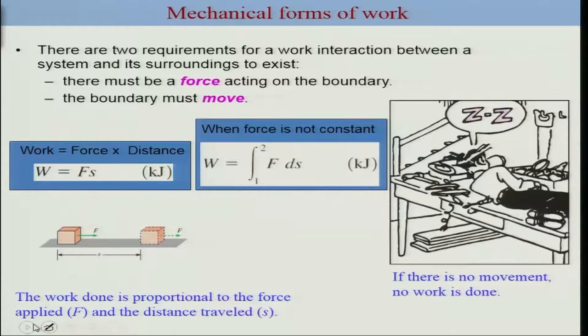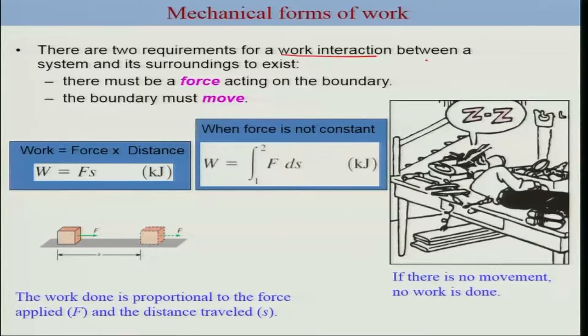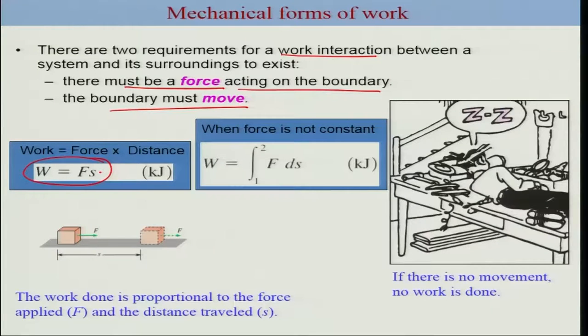There are many forms of work: mechanical forms and non-mechanical forms. Let me first describe mechanical forms of work. Two requirements for work interaction between system and surroundings: there must be a force which acts on a boundary, and the boundary must move. This is an example where the force is constant, in which case you use the expression force into distance. If the force is not constant, you can integrate f over ds from point 1 to point 2. Work done is proportional to the force applied and the distance traveled. If you are not doing any movement, as in the case of this gentleman slipping on a bed, there is no work done for the particular time frame.